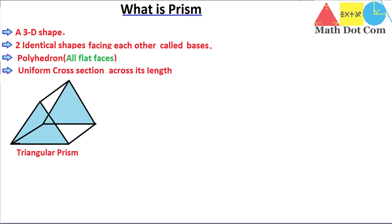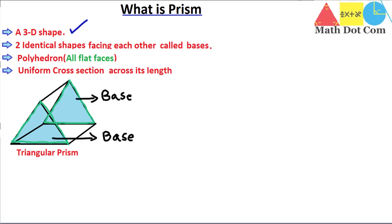Let's discuss all four properties on this triangular prism shape. First property — it is a 3D shape, which is clear. Second property — two identical shapes facing each other called bases. Let me highlight those shapes: this is one and this is the second. These two identical triangles are facing each other and are called the bases. On the basis of the shape of these two bases, a prism is further classified into different types.